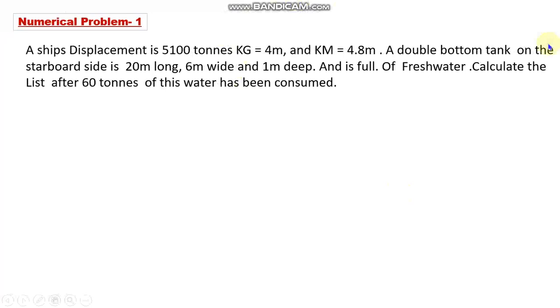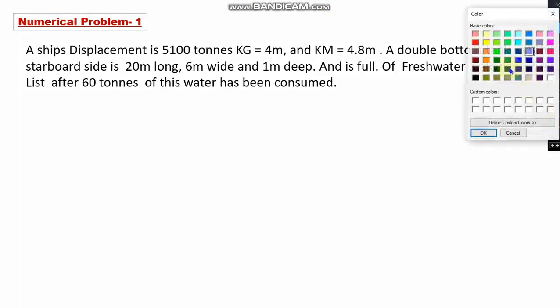Let me start with the first question. We have a ship whose displacement is 5100 tons. The center of gravity KG is given to be at 4 meters and KM is given to be at 4.8 meters.